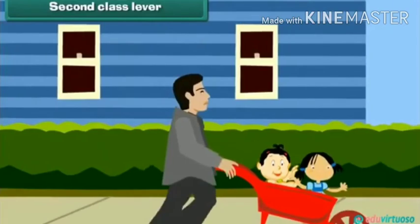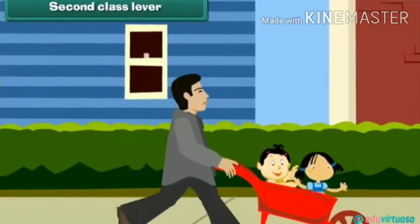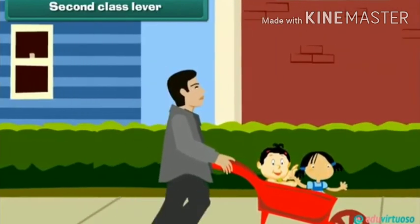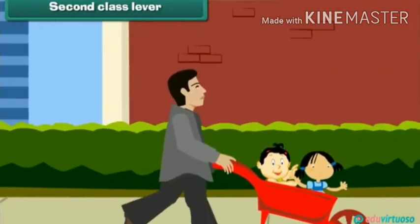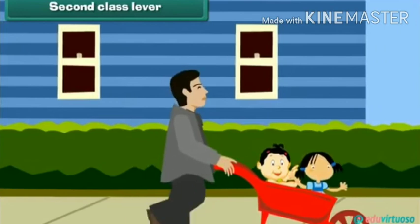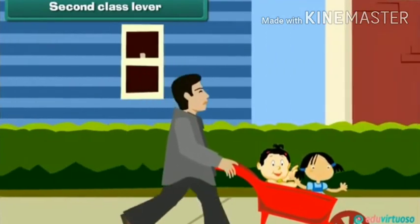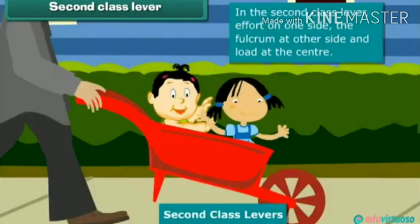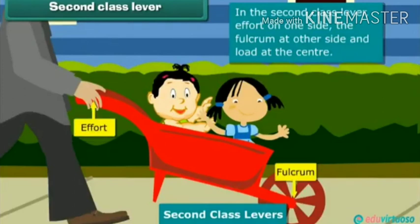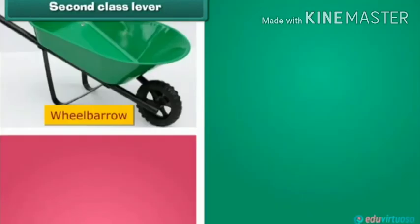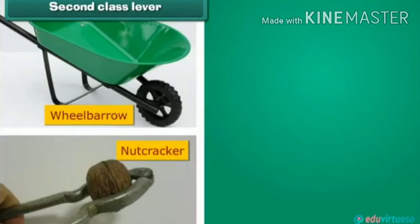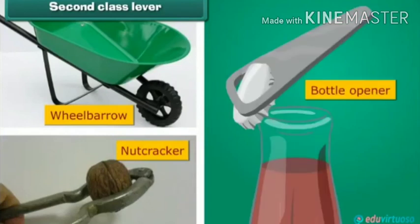Next, we will see other types of levers. The fulcrum is on one end. The resistance is on one side, and the effort is applied from the other side. Examples of this type include a nutcracker and bottle opener.